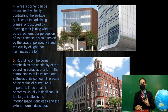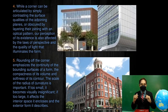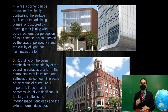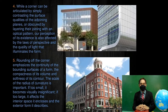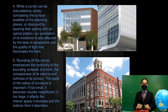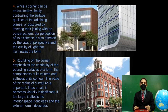While a corner can be articulated by simply contrasting the surface qualities of adjoining planes, or obscured by layering their adjoining surfaces with optical pattern, the perception of its existence is also affected by the loss of perspective and the quality of light that illuminates the form.